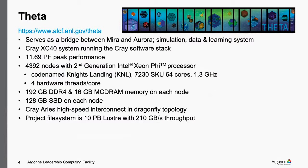Theta has a peak petaflop performance of 11.69 double precision, coming from a total of 4,392 nodes with second-generation Intel Xeon Phi processors, codenamed Knight's Landing. This particular SKU of the KNL nodes has 64 cores running at 1.3 GHz clock frequency, and each of these 64 cores has four hardware threads. A unique feature is two types of memory: 192 GB of DDR4 — big capacity, relatively slow — and 16 GB of MCDRAM, smaller capacity but considerably faster. Each node also has a 128 GB SSD drive, useful for data-centric applications and checkpointing. The Cray Aries high-speed interconnect uses Dragonfly topology, and Theta sits on top of a Lustre file system, 10 petabytes in capacity with 210 GB/s throughput.